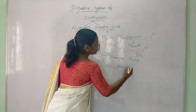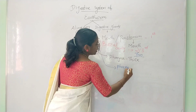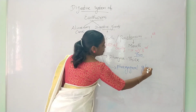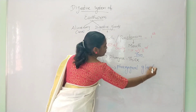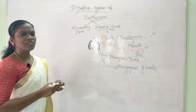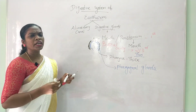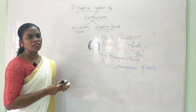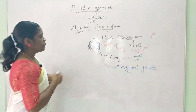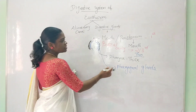In the pharynx, there are structures called pharyngeal glands. The pharyngeal glands secrete enzymes that aid in digestion.